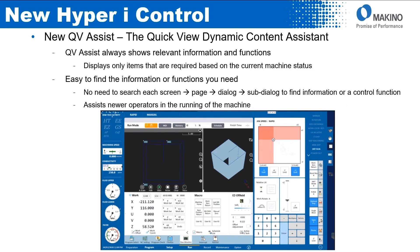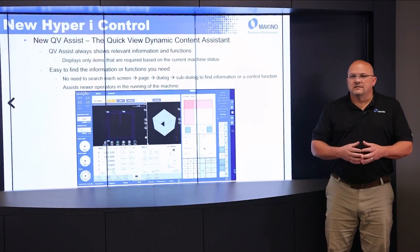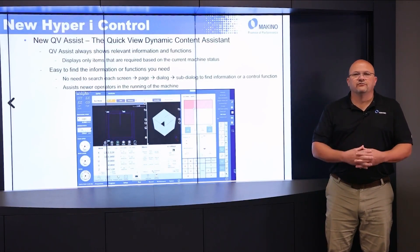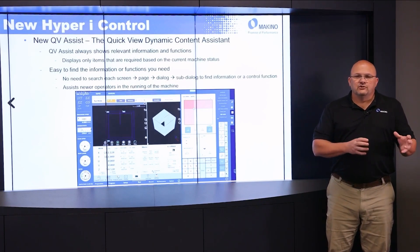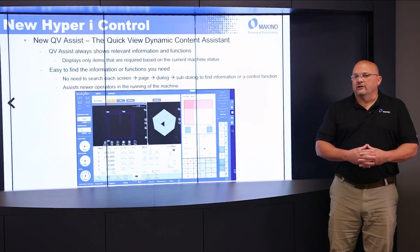Some functions previously required going to a screen, page, dialog, then sub-dialog to find the particular function you were looking for. Now it's going to automatically come up for the operator. This is a big help to new operators - it will assist them in running the machine because it makes it much easier to learn the control, as the functions required based on the machine status will come up automatically.